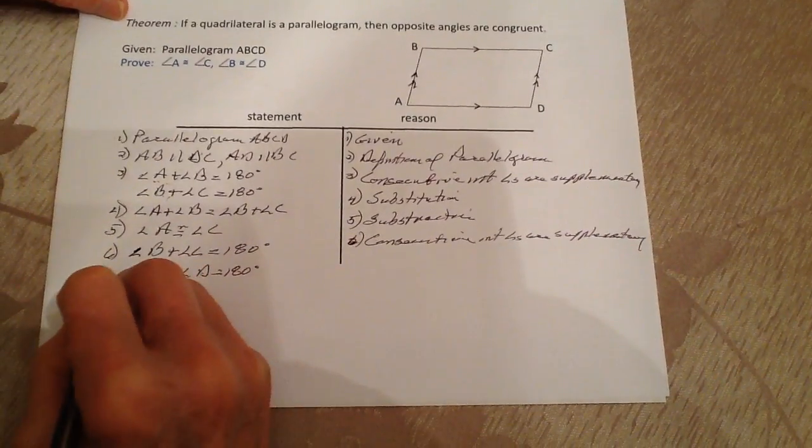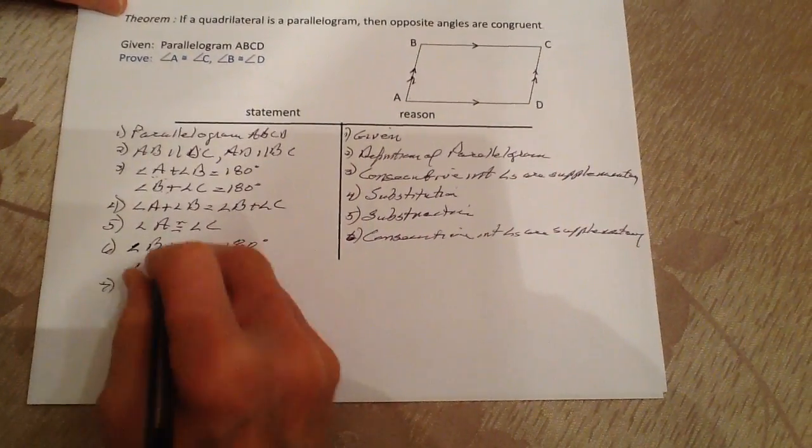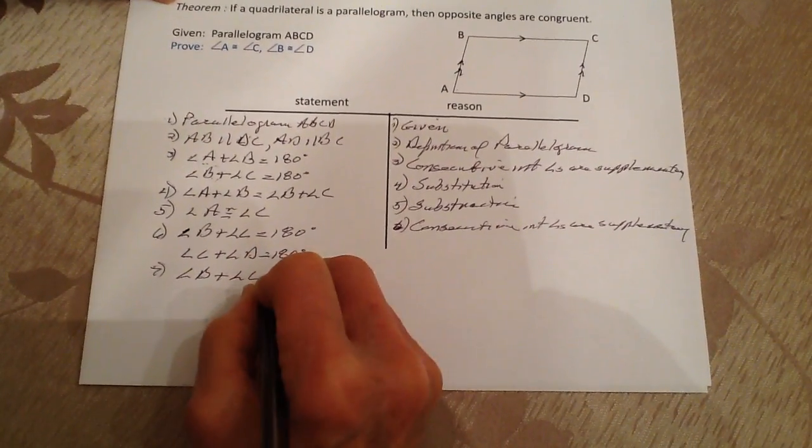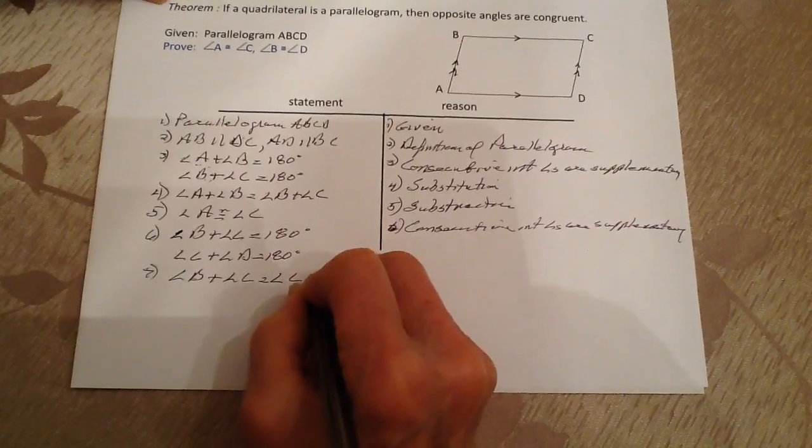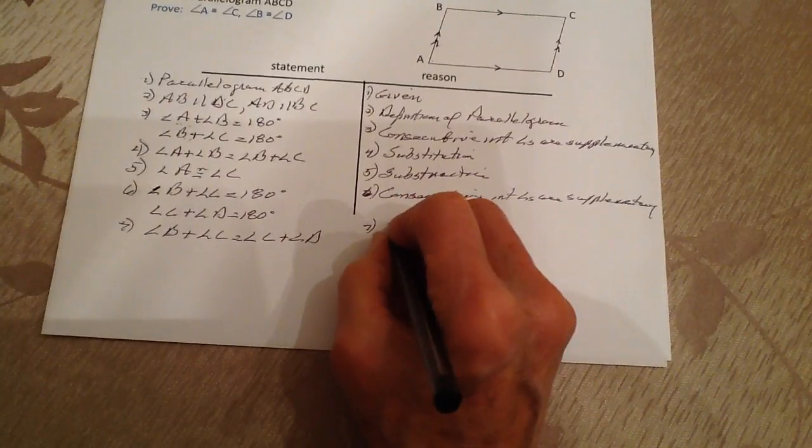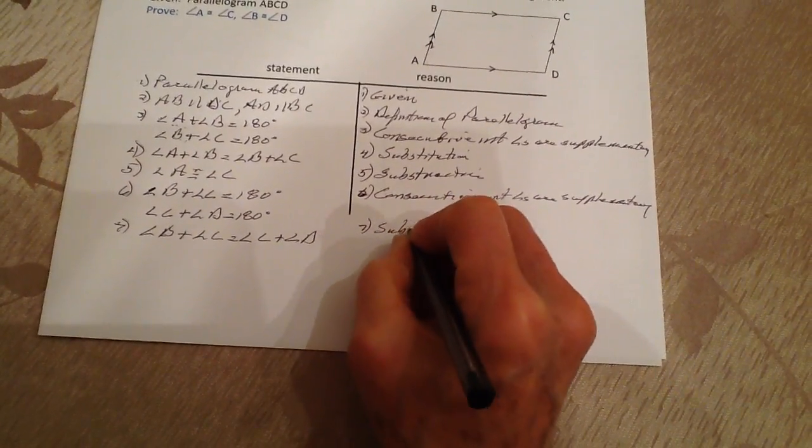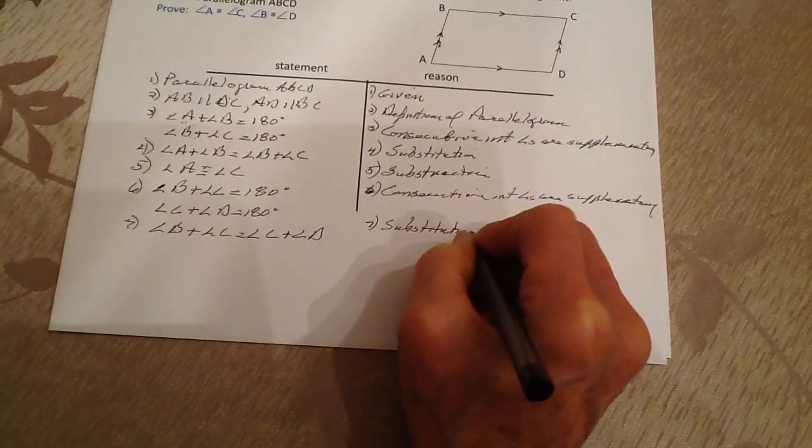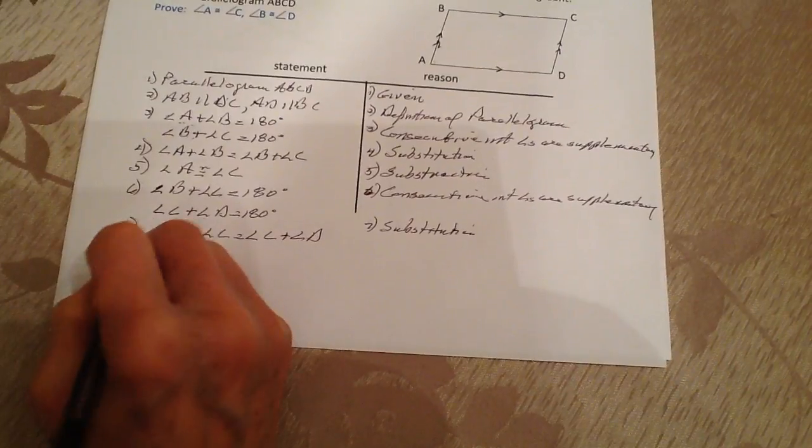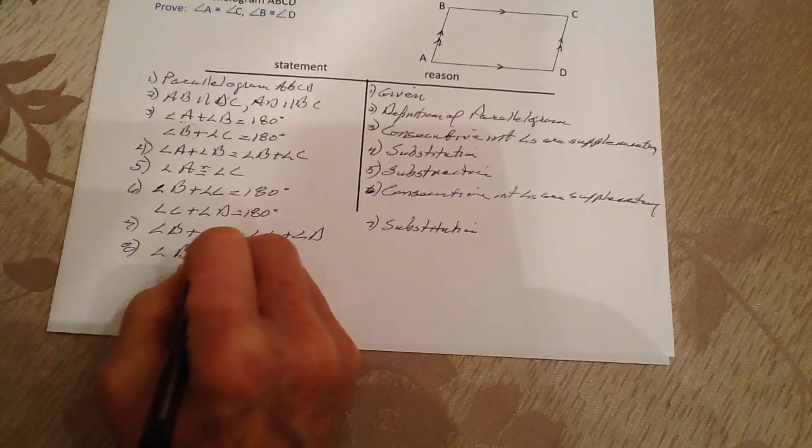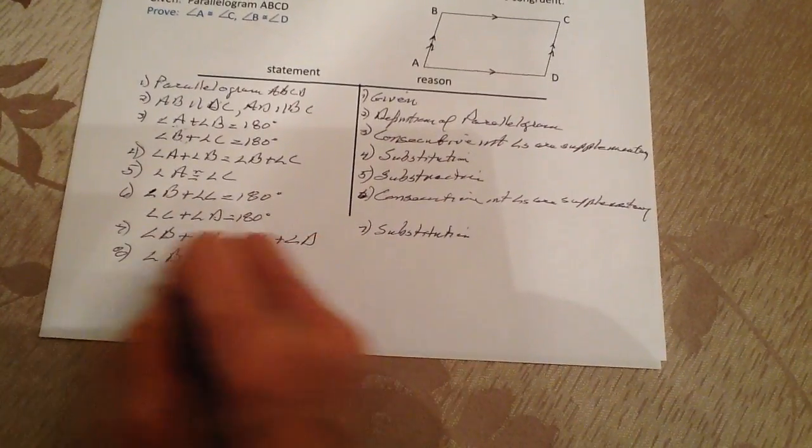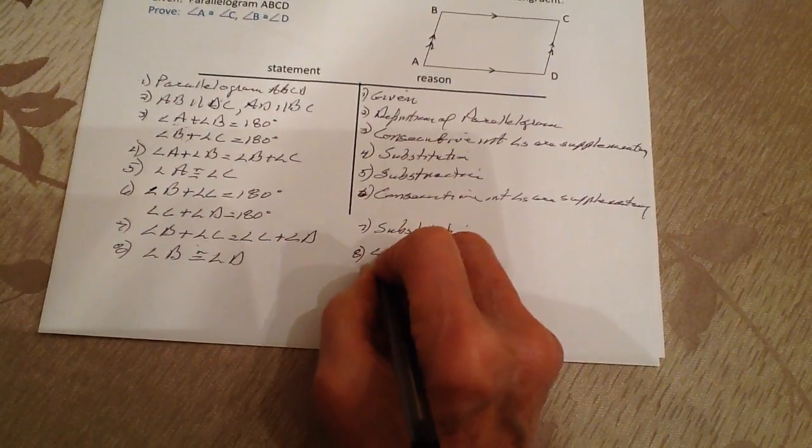Then statement seven: we follow the same step and set them equal to each other. Angle B plus angle C is equal to angle C plus angle D because of substitution. Then we subtract out angle C, which is common to both sides. Statement eight: we're left with angle B is congruent to angle D. That's subtraction.